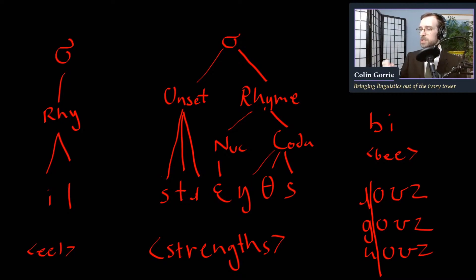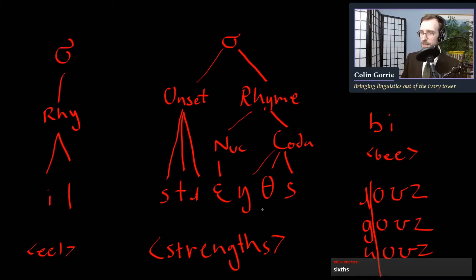Then once we have this language of onset nucleus and coda, we can start to slice and dice syllables in other ways. So we can distinguish between syllables that have a coda and syllables that don't have a coda. And these two types of syllables tend to pattern in different ways across languages. So we have good, concise names for them. If a syllable contains a coda like eel or strengths or goes, we are going to call that a closed syllable. And if a syllable contains no coda like B or T, then we're going to call that an open syllable.